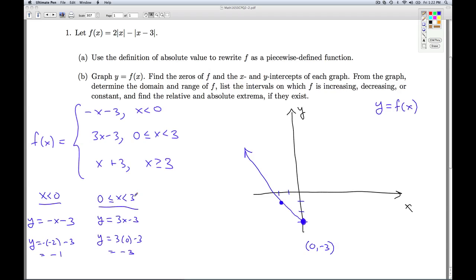And as before, I can find the location of the hole in the graph coming from here if I plug 3 into this formula. And by doing that, I'm going to get 3 times 3 is 9, minus 3 is 6. So I connect these two together. It's a reasonably straight line. There it is.